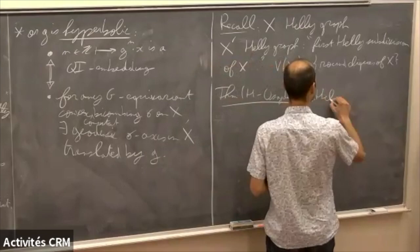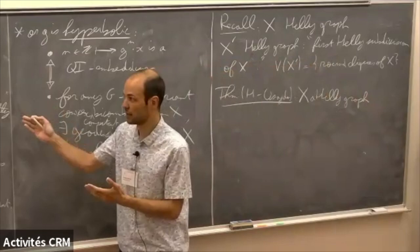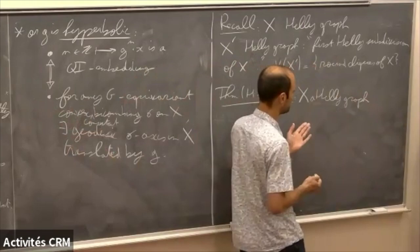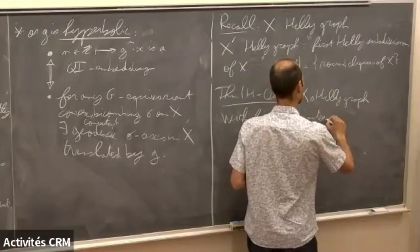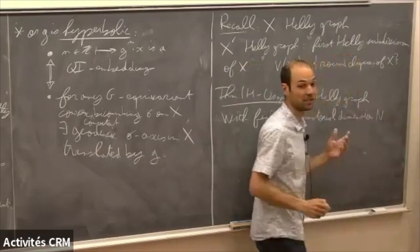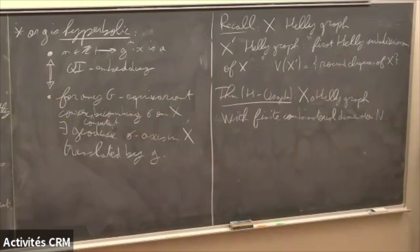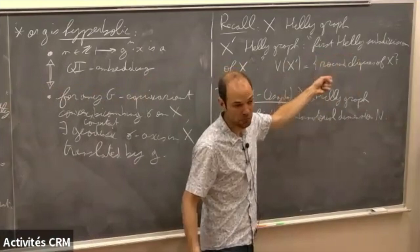It's a result with Damien Osajda. Let X denote a heli graph. As in the case of injective spaces, we need some restriction to have only semi-simple isometries. The natural restriction here is to bound the combinatorial dimension — finite combinatorial dimension n. What is this? It's the topological dimension of the injective hull. It's finite, for instance, if your graph has bounded degree. It coincides with the maximum length of chains of cliques.